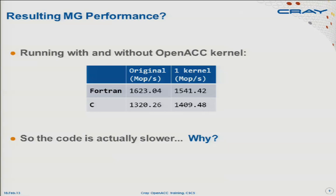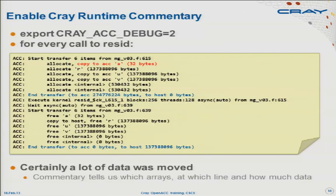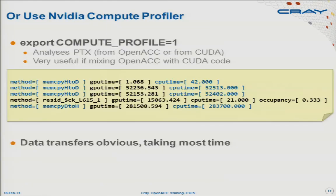We accelerate that one routine and the code goes slower — though C actually goes slightly faster, probably because of poor CPU scheduling. The Fortran is going slower, and the reason is data transfers. If you run it with runtime commentary, every time Resid is called you can see massive arrays being moved to the GPU and back, and you can identify which arrays are responsible.